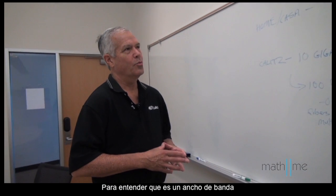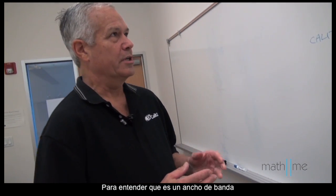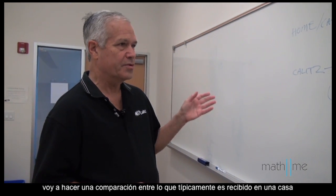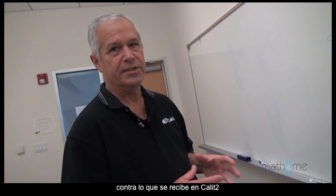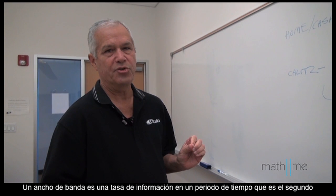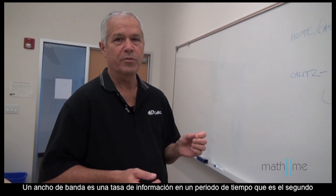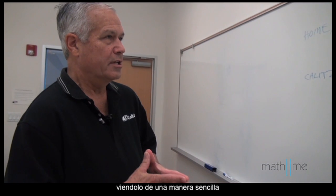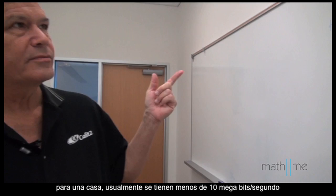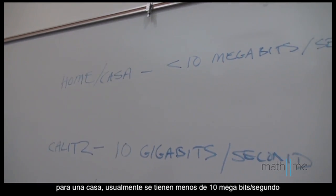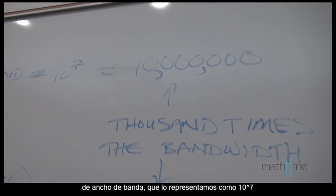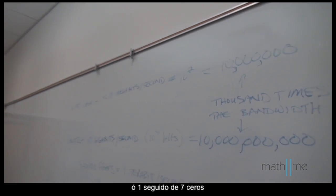To understand what bandwidth is, I want to make a comparison between what typically is received at a home versus what we typically use here at Cal-IT2. Fundamentally, bandwidth is a rate — it's bits of information over a period of time, which is a second in the typical way we talk about it. To the home, usually you have less than 10 megabits per second of bandwidth. We can represent that as 10 with an exponent of 7, or 10 to the seventh power — 1 followed by 7 zeros.